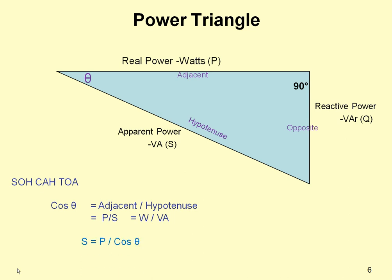We can also find the apparent power S by knowing that it's power over cos theta, or it's also equal to the power squared plus the reactive power squared.